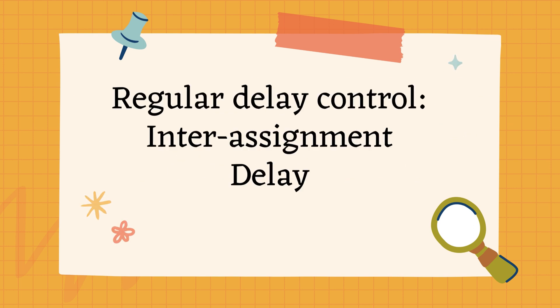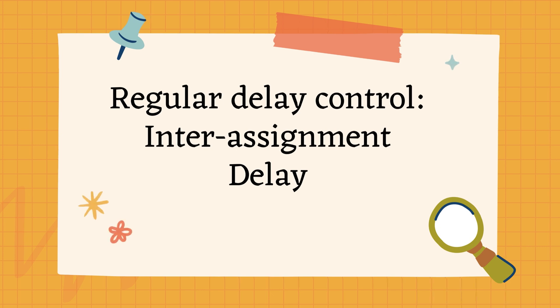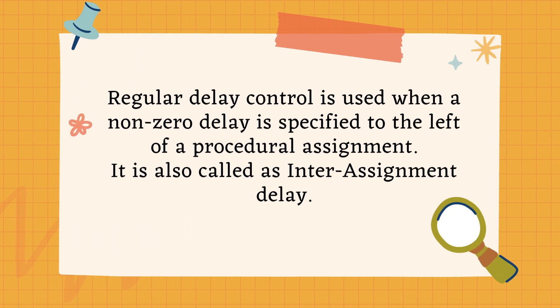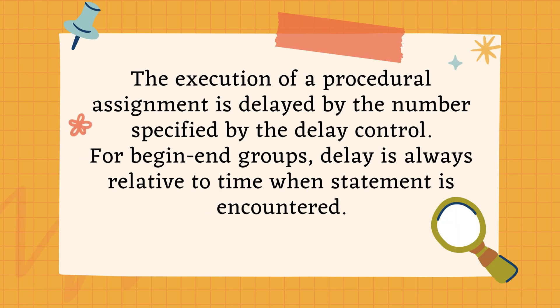First comes regular delay control, also known as inter assignment delay. Regular delay control is used when a non-zero delay is specified to the left-hand side of a procedural assignment. The execution of a procedural assignment is delayed by the number specified by the delay control. For begin-end groups, the delay is always relative to the time when the statement is encountered.